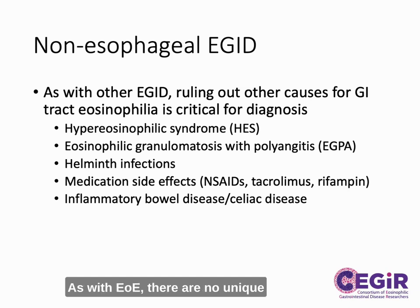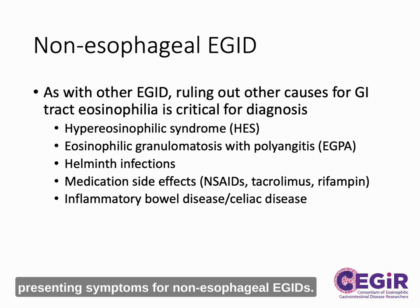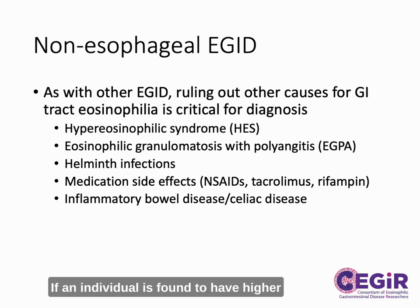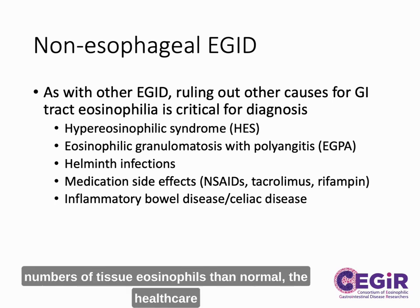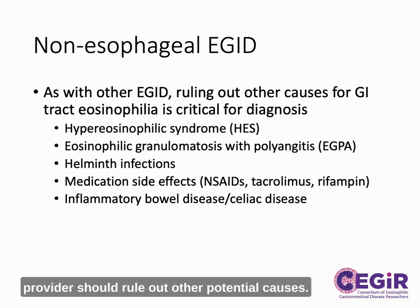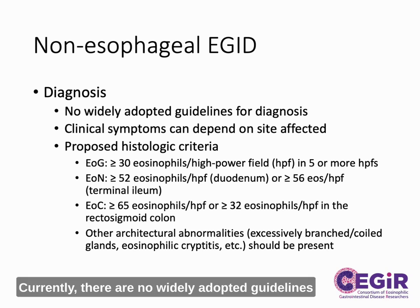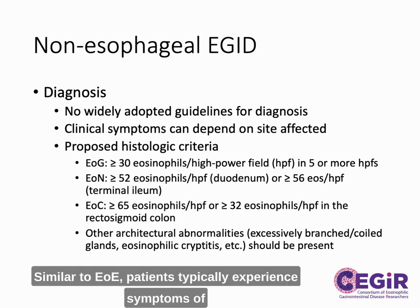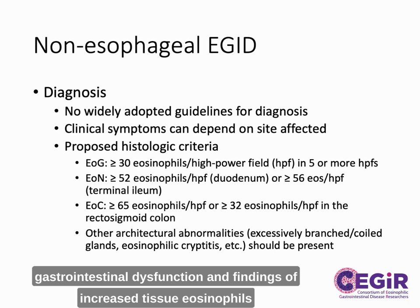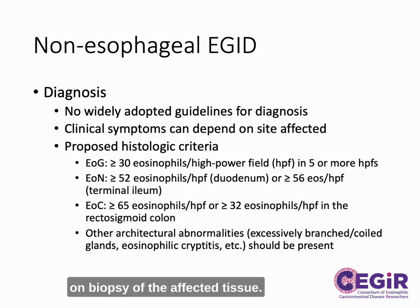As with EOE, there are no unique presenting symptoms for non-esophageal eGIDS. If an individual is found to have higher numbers of tissue eosinophils than normal, the healthcare provider should rule out other potential causes. Currently, there are no widely adopted guidelines for the diagnosis of non-esophageal eGIDS. Similar to EOE, patients typically experience symptoms of gastrointestinal dysfunction and findings of increased tissue eosinophils on biopsy of the affected tissue.